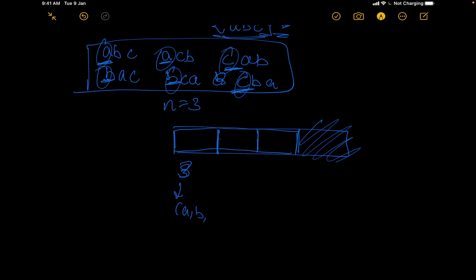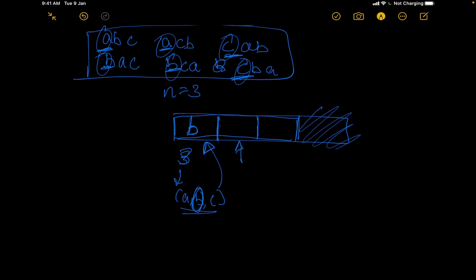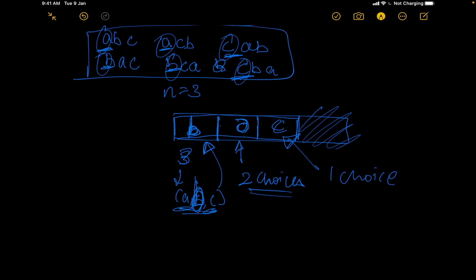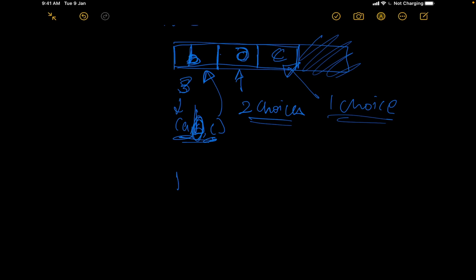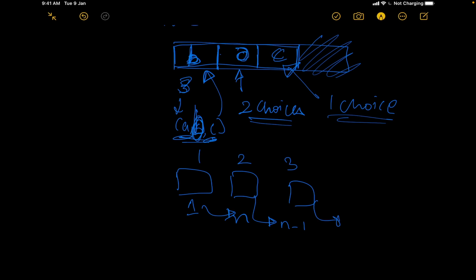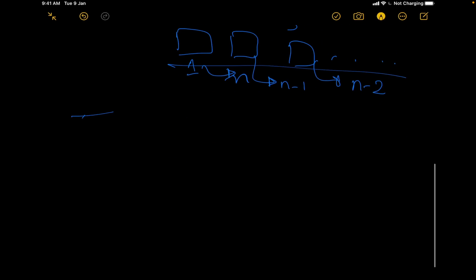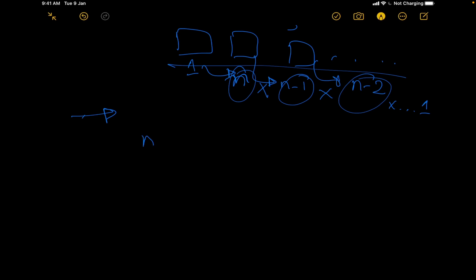For the first character we have a total of 3 choices — we can have either a, b, or c. Let us say we select b for this. In the second slot we will have 2 choices — the elements remaining after populating the first cell. Since we populated the first cell with b, a and c are remaining, so we can populate it with a or c. Let us say we populate it with a. The only remaining choice is c, so there was only 1 choice. So to generalize: for the first block we had n possibilities, for the second block n-1, for the third n-2, and so on. The total number of possibilities would be n × (n-1) × (n-2) × ... × 1. This is basically what a factorial is.